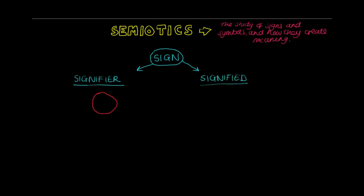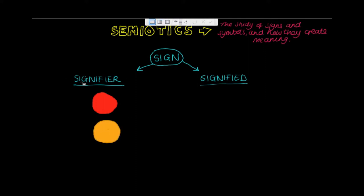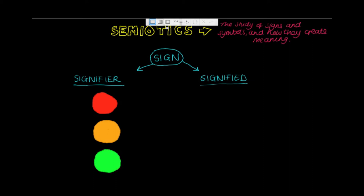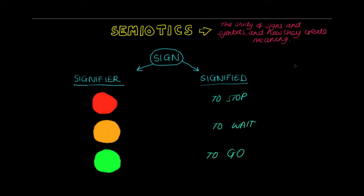The signifier is what we actually see. When we put this into a context this can become easier. Take for example a traffic light. The signifier is the green light itself, while the signified is the concept that we think of when we see such a sign — the idea to go or to drive.